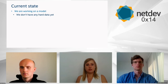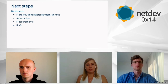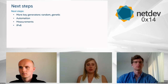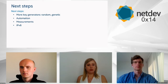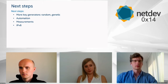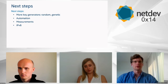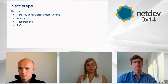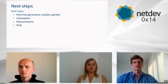When the model is done, in the next steps we'd like to think about more key generators — possibly adding randomness and reusing the already-developed genetic algorithm. Then we will work on automation, measurements, and support for IPv6, since currently we are only dealing with IPv4. Thank you very much for your attention. We realize this is a work in progress, but this is our lead-in and we'd like to stimulate discussion — any feedback or comments are appreciated.